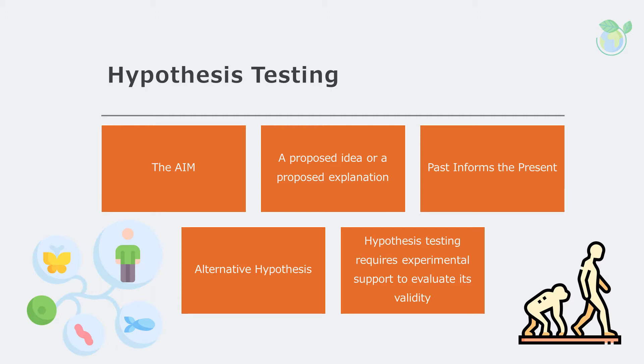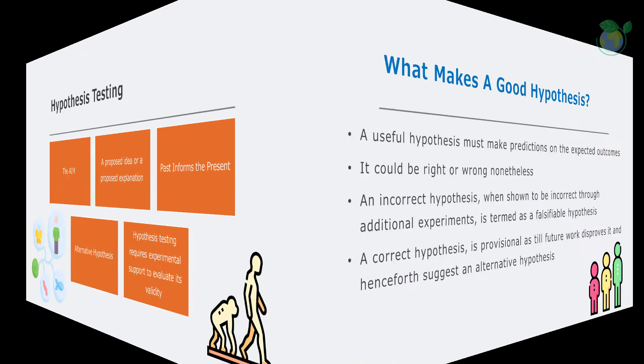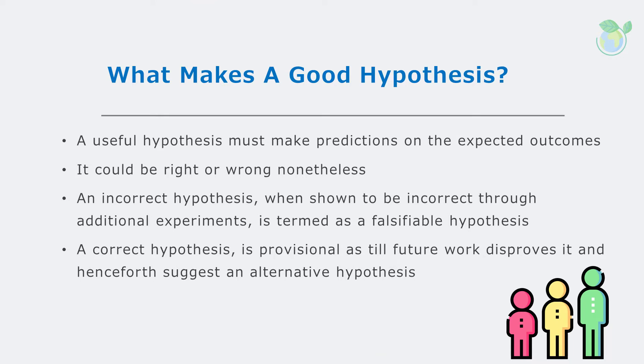Hypothesis testing requires experimental support to evaluate its validity. A useful hypothesis must make predictions on the expected outcomes — it could be right or wrong nonetheless. An incorrect hypothesis, when shown to be incorrect through additional experiments, is termed a falsifiable hypothesis. A correct hypothesis is provisional until future work disproves it and suggests an alternative hypothesis.